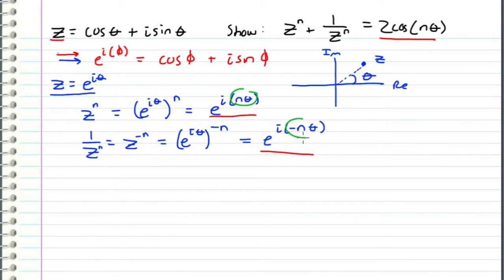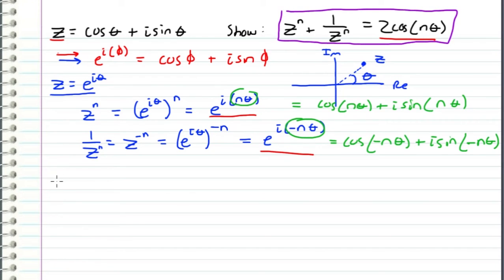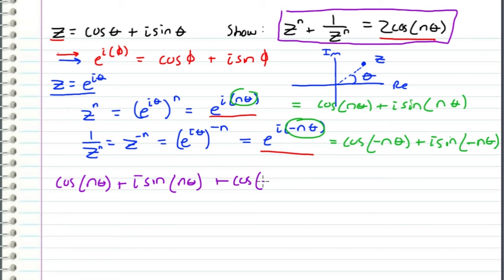The angles in these expressions become the arguments of cosine and sine. So z to the n is equal to cosine of n theta plus i sine of n theta. And one over z to the n is equal to cosine of negative n theta plus i sine of negative n theta, because the angle in its polar form becomes the angle of the arguments of the cosine and sine functions according to Euler's formula. So now plugging those two expressions into our equation, z to the n plus one over z to the n equals cosine of n theta plus i sine of n theta plus cosine of negative n theta plus i sine of negative n theta.